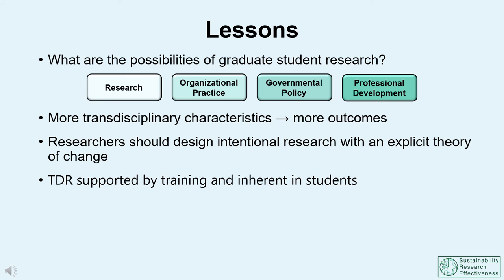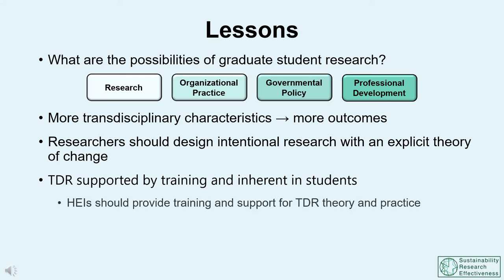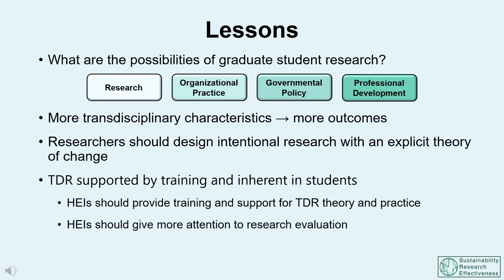To cultivate impactful research, universities should recruit students who are interested in change making and provide appropriate training in epistemology, methodology, and stakeholder engagement. Training and support in the use of theory of change are also critical. To help foster an impact culture, universities should undertake systematic impact assessments of their research portfolios to ensure continuous learning from successful research endeavors as well as failures.